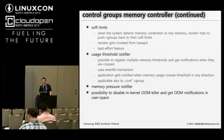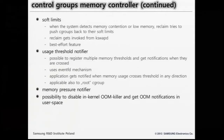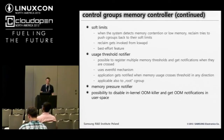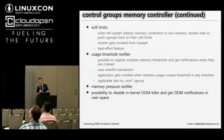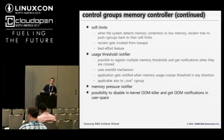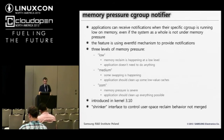Another important feature of memcg is the usage threshold notifier — it's possible to register multiple memory thresholds and get notifications in user space when they are crossed. We also have the new memory pressure notifier, which is similar but instead of getting notifications on crossing limits, we get notifications when memory pressure is increasing. I will describe it more in the next slide. Another important feature of memcg is the possibility to disable the in-kernel out-of-memory handler and use user space out-of-memory notifications, doing all handling in user space.